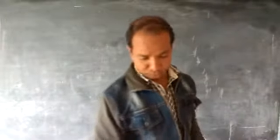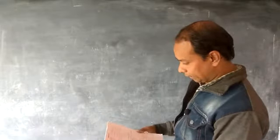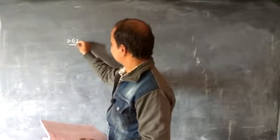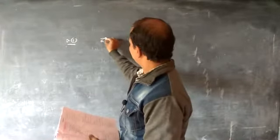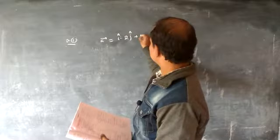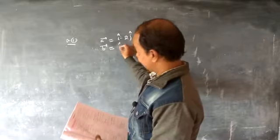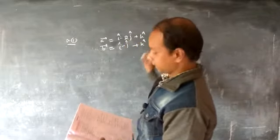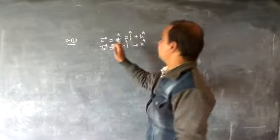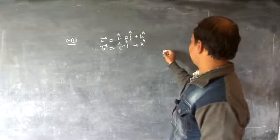Question 1: It's been given that if a = i - 2j + k and b = i - j + k, then find a vector which is perpendicular to both these vectors.